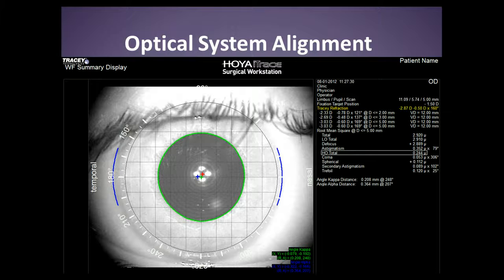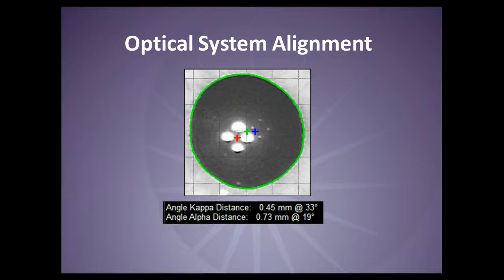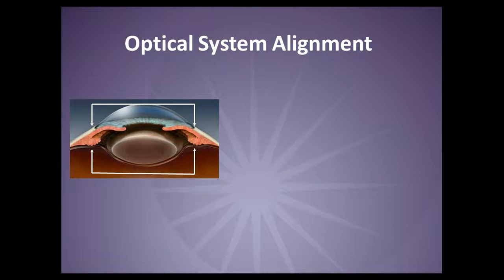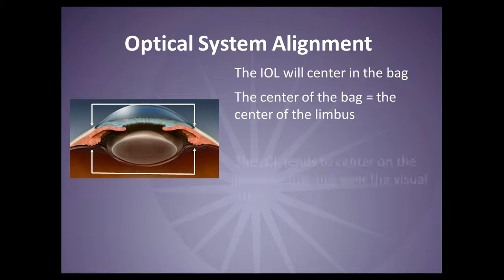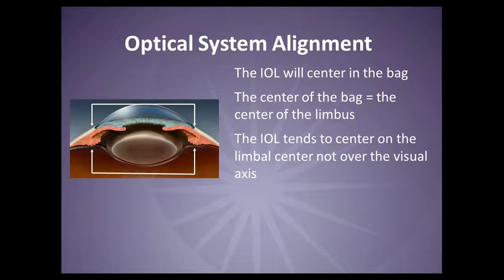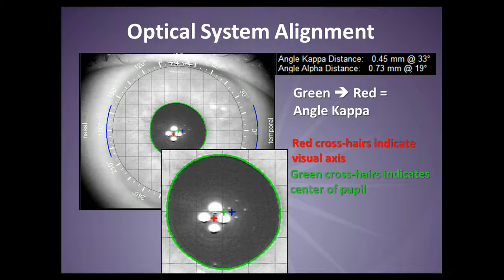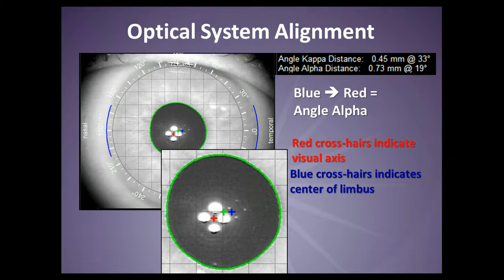Next, we need to consider optical alignment. The iTrace provides the angle kappa and angle alpha display. These two indices help the surgeon know more about the optical alignment potential of the IOL as it relates to the visual axis. The implanted lens tends to center on the capsular bag, which is the same optical center as the limbus. Thus, we can surmise that the optical center of the limbus will be a close approximation to the optical center of the IOL. Angle kappa is the vector distance from the visual axis, marked here with the red crosshair, to the center of the pupil, denoted by the green crosshair. Angle alpha is the vector distance from the visual axis, again red, to the center of the limbus, denoted with the blue crosshair.